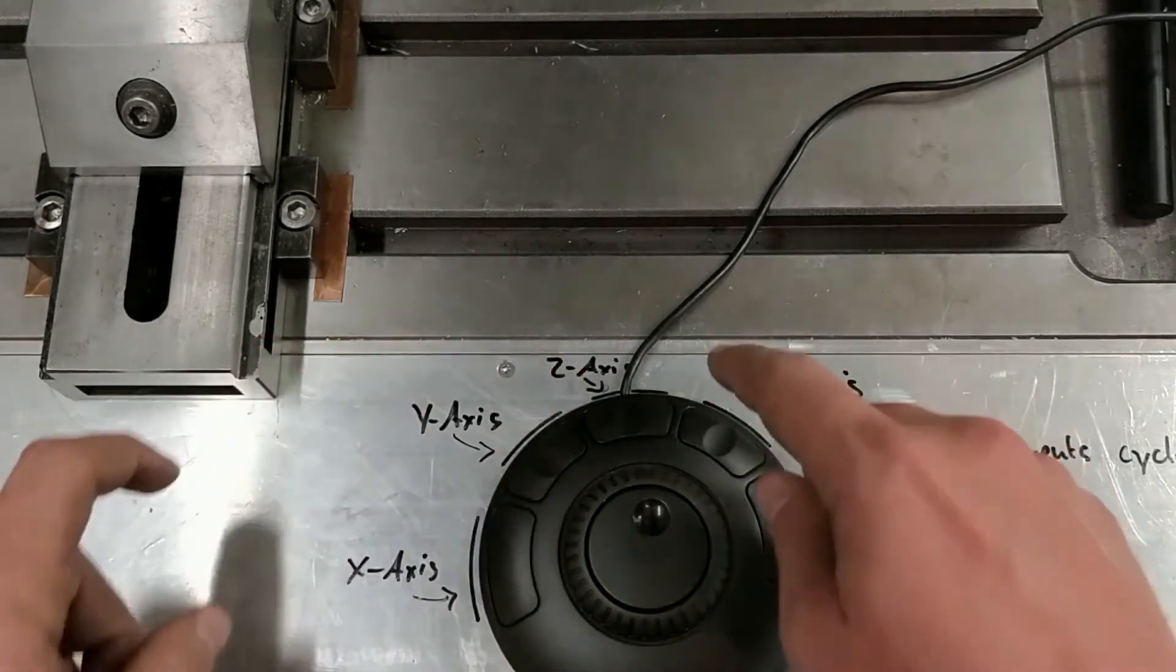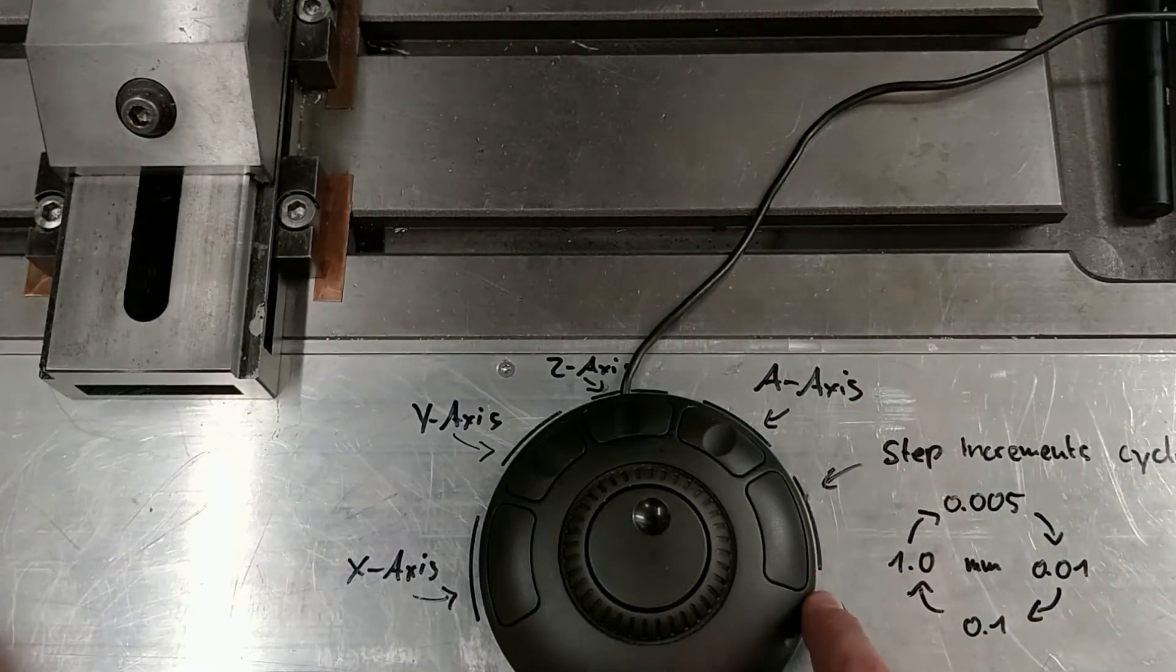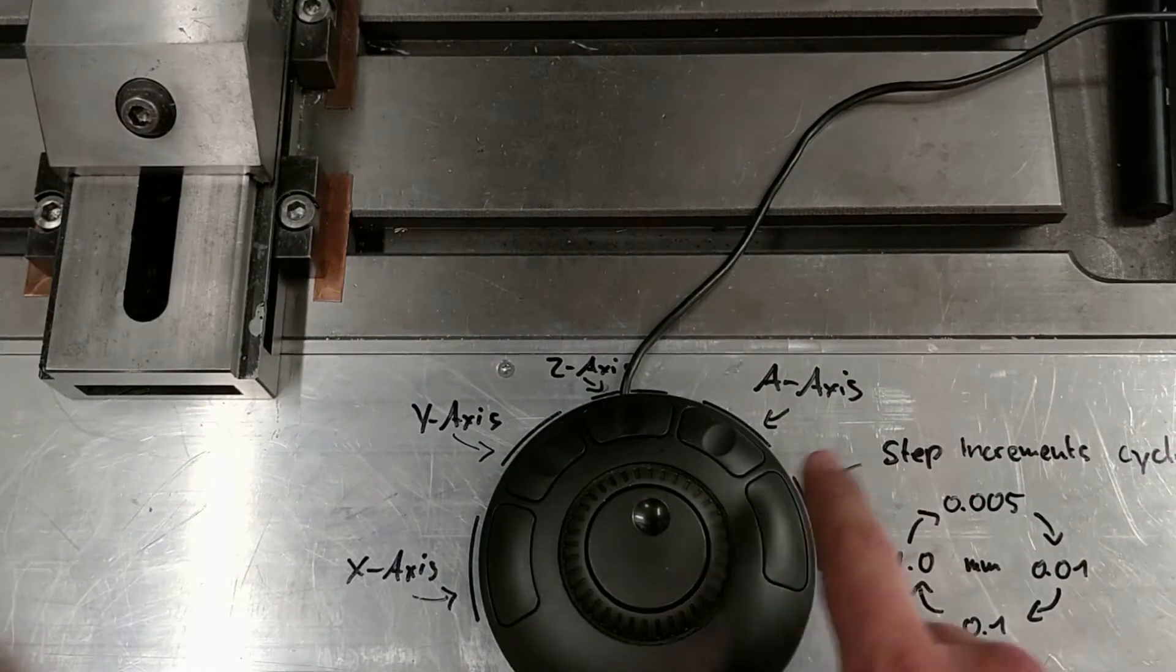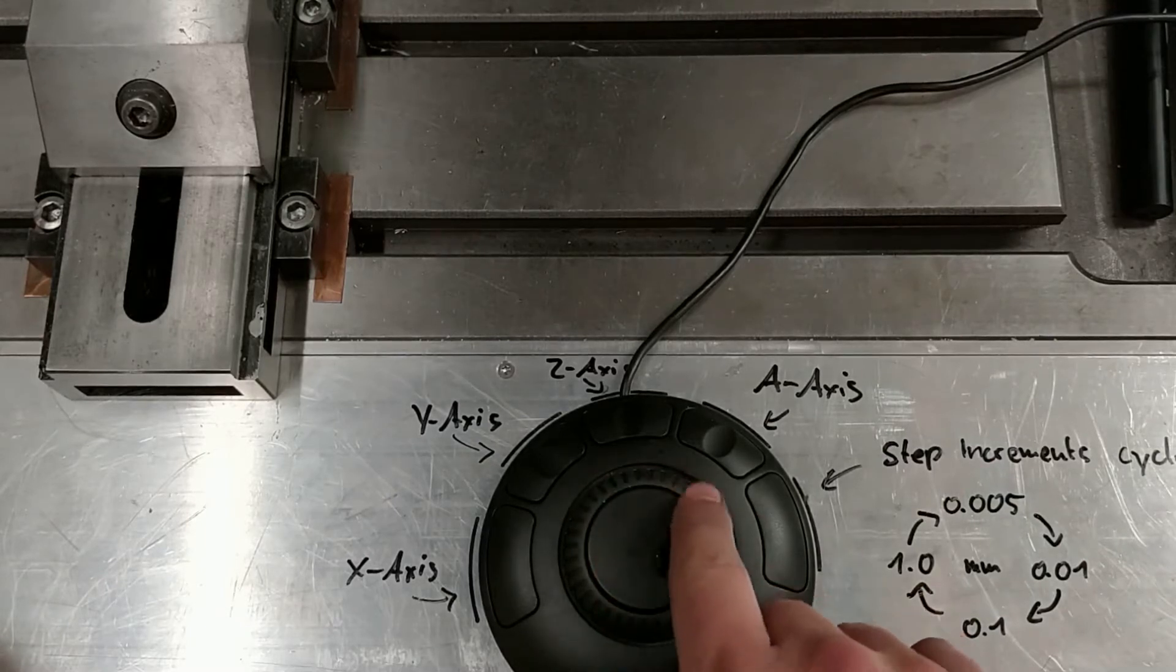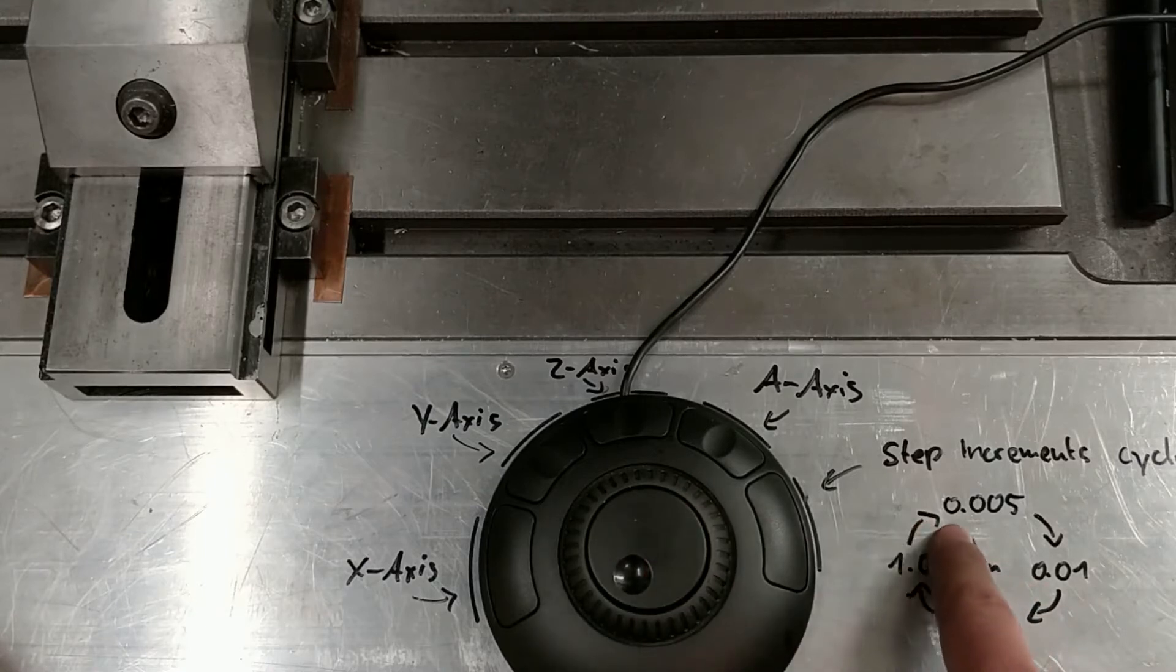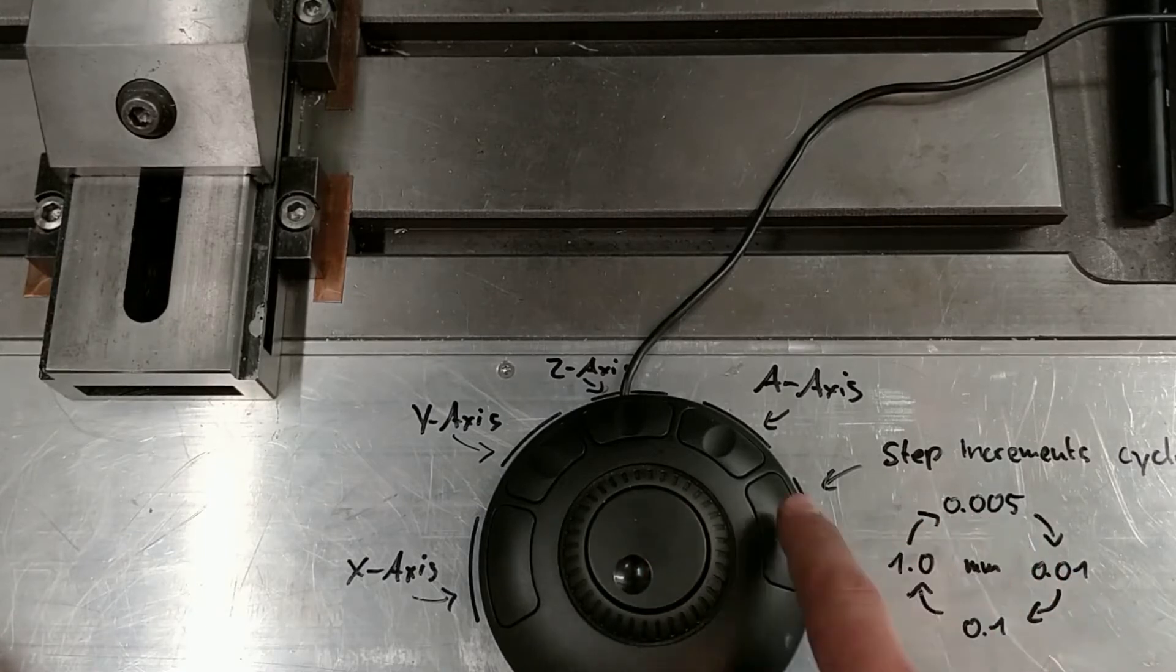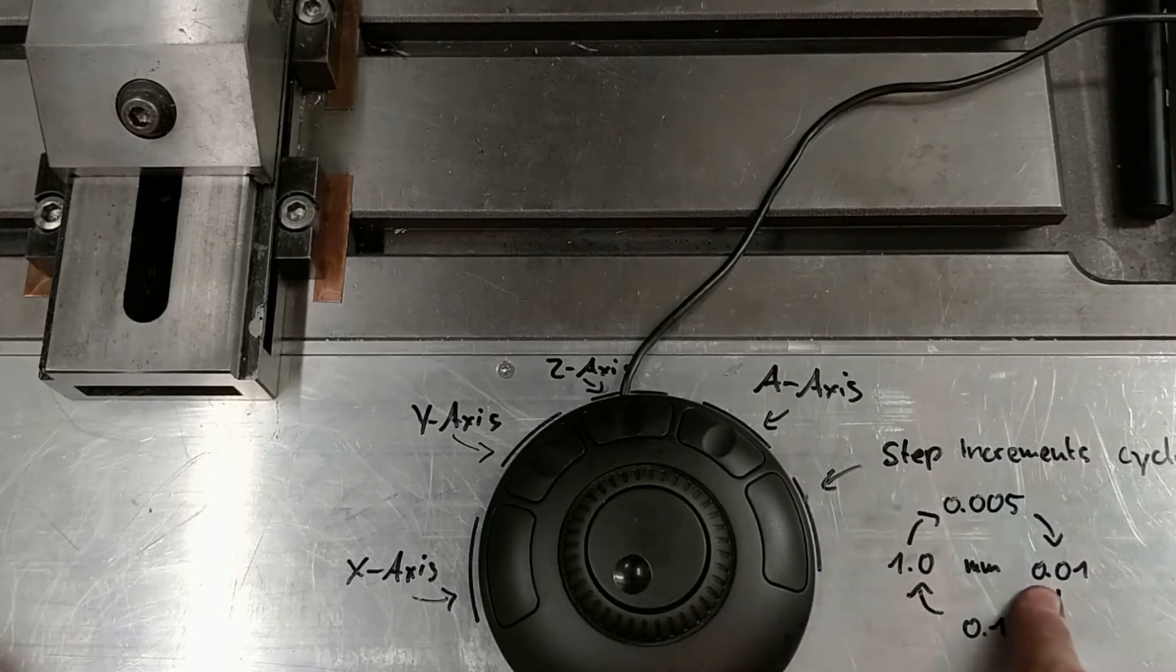So it's X, Y, Z, and A axis. And the fifth button is to cycle through the step increments that each of the steps of this inner wheel does. So we start at 0.005 millimeters. And if I click on the button, we cycle to the next one.